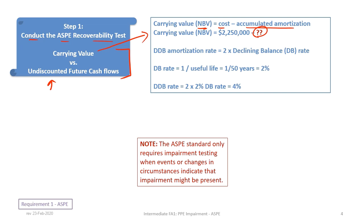The problem states the company uses double declining balance amortization, but the rate is not directly given. You only need the useful life to determine it. The declining balance rate is 1 over the useful life: 1/50 = 2%. Therefore, the double declining balance rate is 2 × 2% = 4%. This 4% rate will be used to calculate accumulated depreciation.